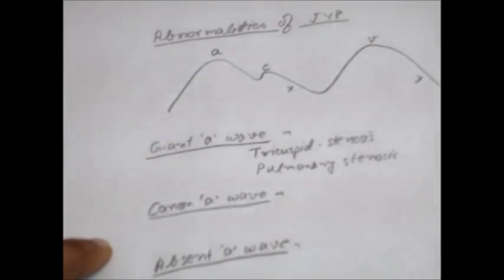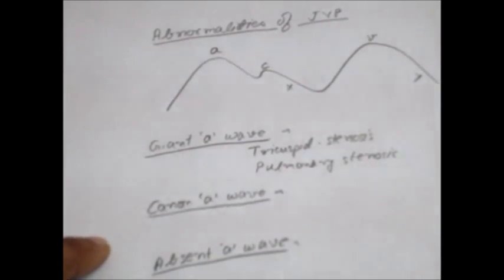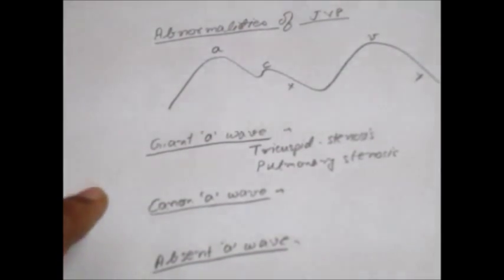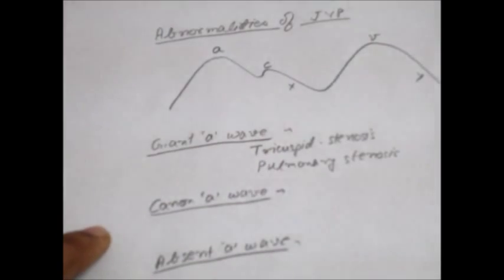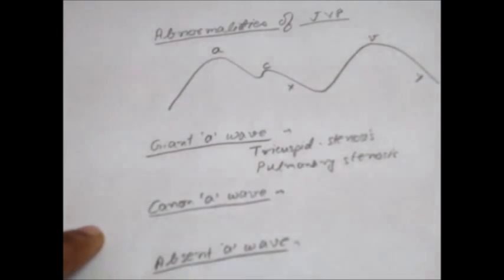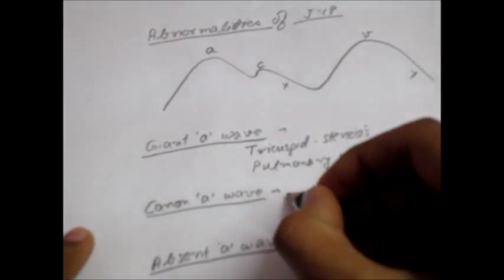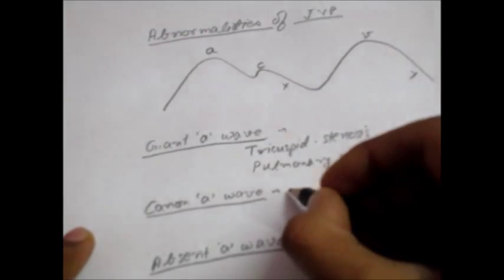Now let's talk about Cannon A-Waves. Cannon A-Waves are formed when the right atrium contracts against the closed tricuspid valve. This causes an increased pressure wave in the right atrium which travels back to the jugular vein. This is a characteristically large A-Wave.